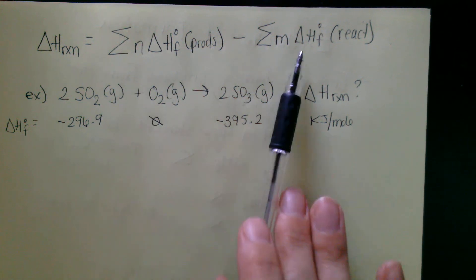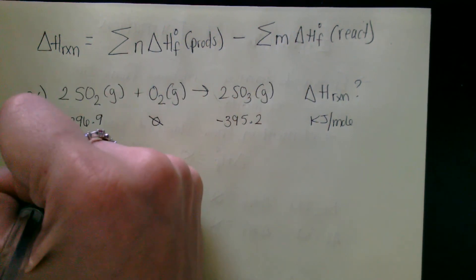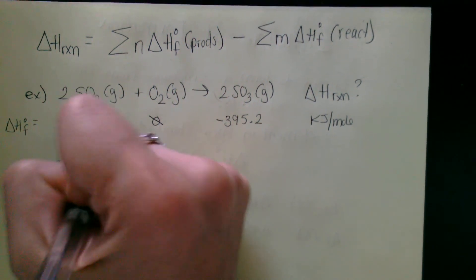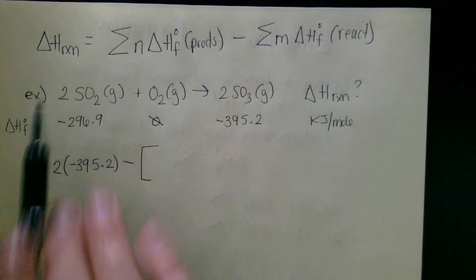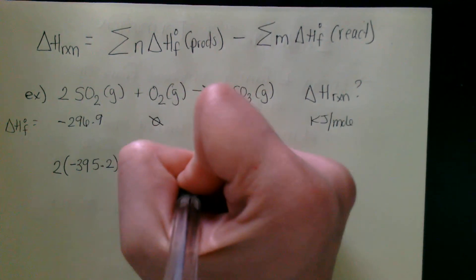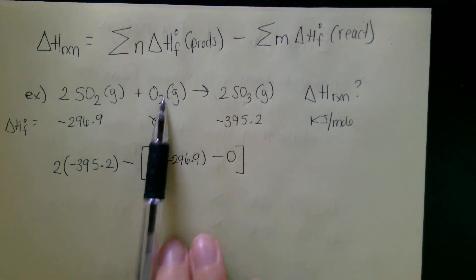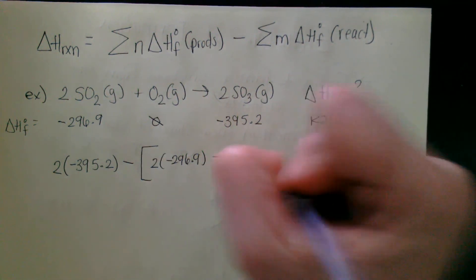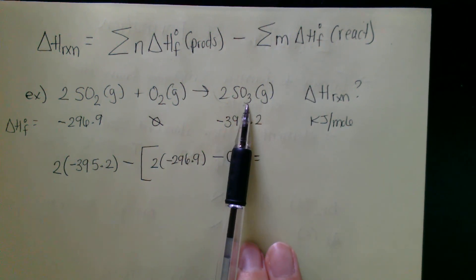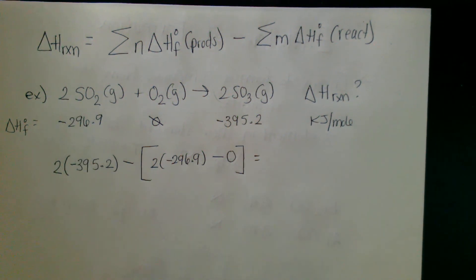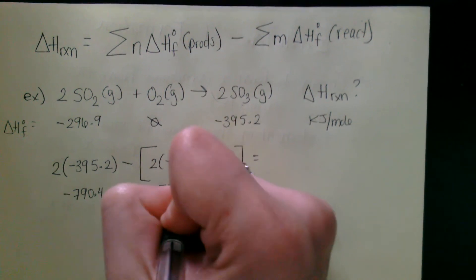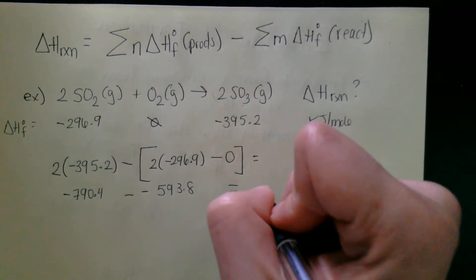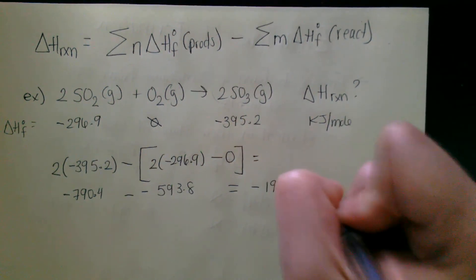Using the formula, we start with our products. SO3 has a coefficient of 2, so 2 times negative 395.2. Then subtract the reactants: 2 times negative 296.9, subtract zero for oxygen. So 2 times negative 395.2 gives negative 790.4, minus negative 593.8, giving an overall enthalpy of negative 196.6 kilojoules for this reaction.